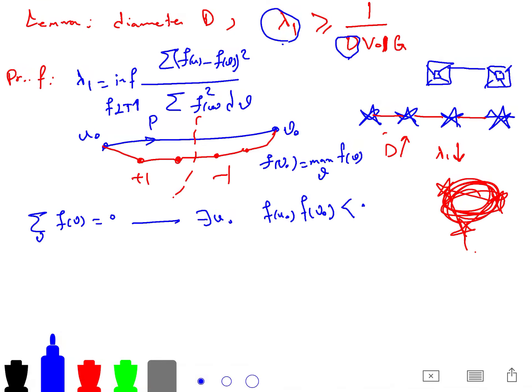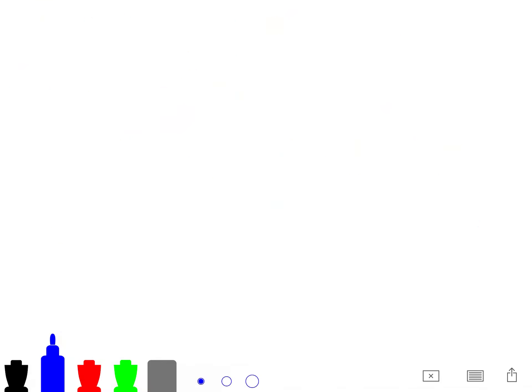And now we are ready to say that lambda 1 is, if you write it as sum of (f(x) - f(y))^2 over sum of f(x)^2 dx,